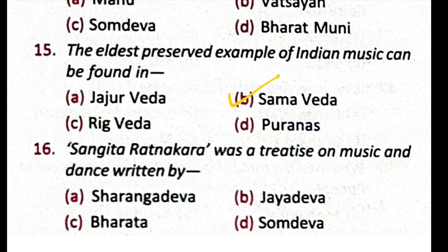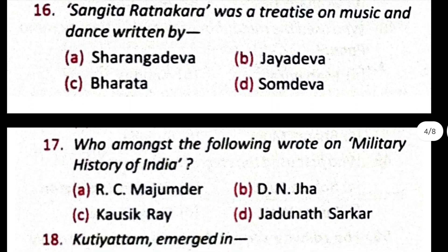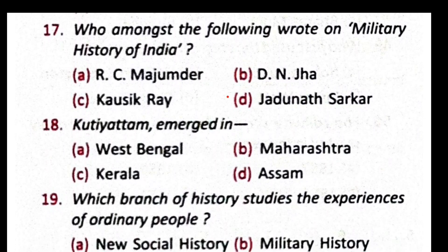Question number 16: Sangeet Ratnakar was a treatise on music and dance written by — option A is correct, Sarang Deva. Question number 17: who among the following wrote on the military history of India? The correct answer is D, Jadunath Sarkar. Question number 18: Kutiyattam emerged in — option C is correct, Kerala.